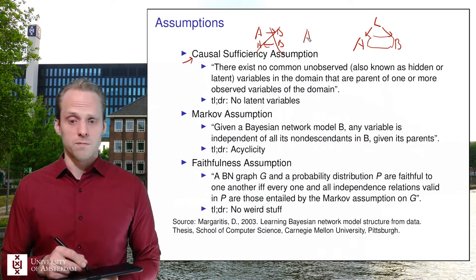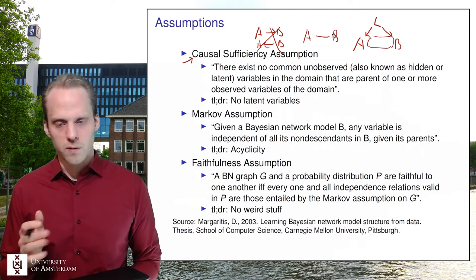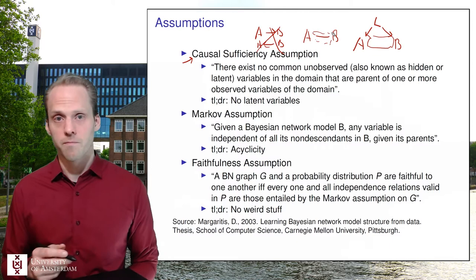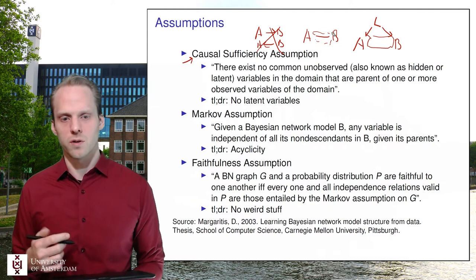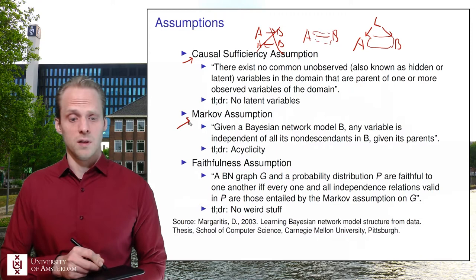We get the same situation in undirected models, but it's less problematic because there's no strong causal hypothesis from an arrow. In a DAG, one thing pointing to another immediately gives you a very strong causal interpretation, so the causal sufficiency violation is more serious there.